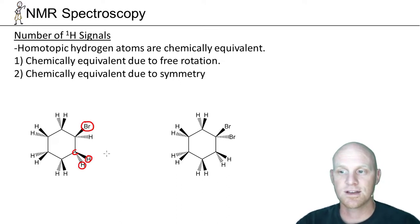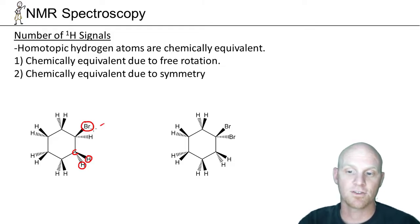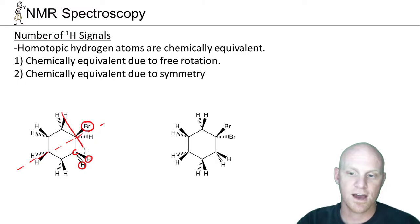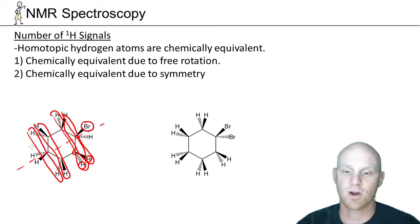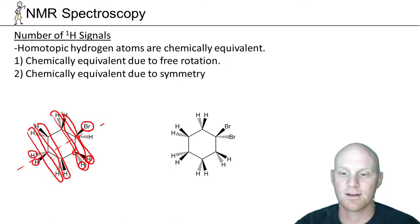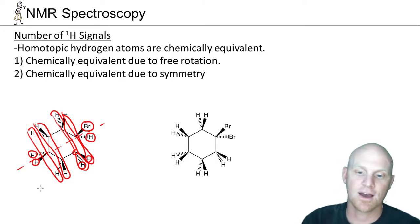Since there's no free rotation, equivalence can only come from symmetry — and that front-to-back symmetry just isn't there. However, there is a plane of symmetry right down the middle of the molecule, so the two wedged hydrogens on symmetric carbons are equivalent, the two dashed hydrogens are equivalent, and so on. But wedge versus dash on the same carbon are not equivalent. Counting all distinct environments gives us seven unique hydrogen environments and therefore seven signals.